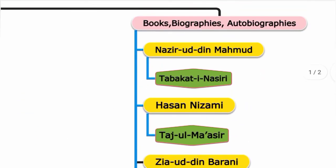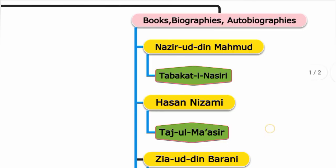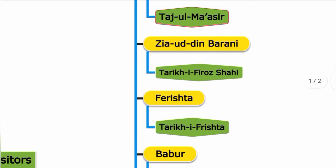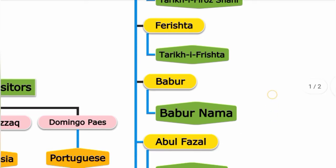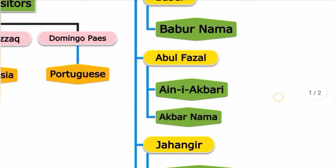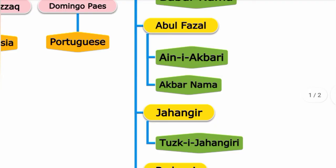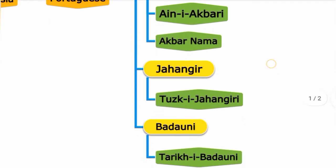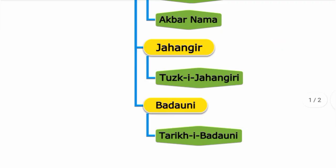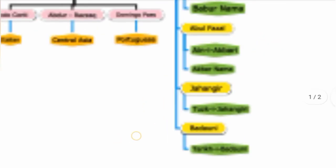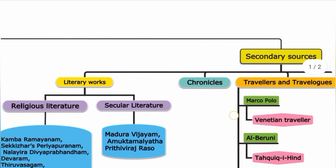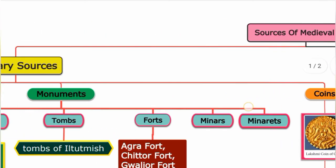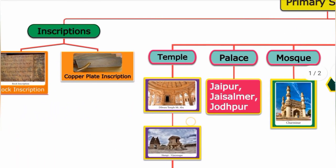To summarize the books and biographies under secondary sources: Naziruddin Muhammad — Tabakat-i-Nasiri; Hasan Nizami — Tajul Masir; Ziauddin Barani — Tarikh-i-Firoz Shahi; Firishta — Tarikh-i-Firishta; Babur — Baburnama; Abul Fazl — Akbarnama.